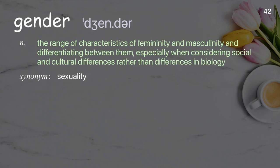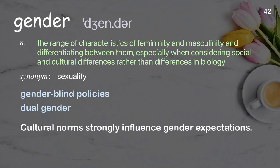Gender: the range of characteristics of femininity and masculinity and differentiating between them, especially when considering social and cultural differences rather than differences in biology. Examples: gender-blind policies; dual gender. Cultural norms strongly influence gender expectations.